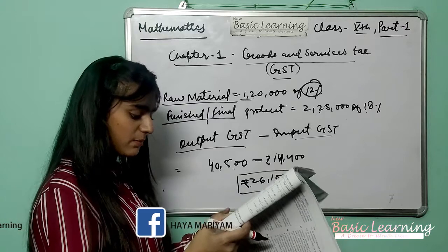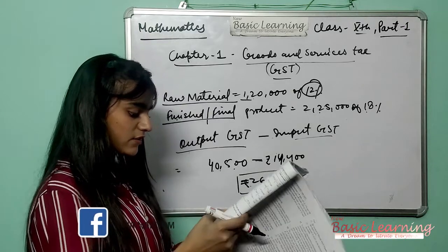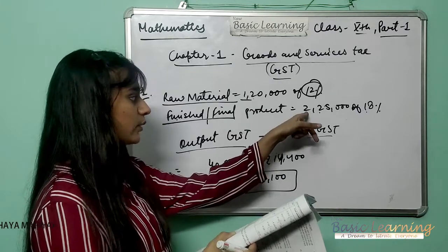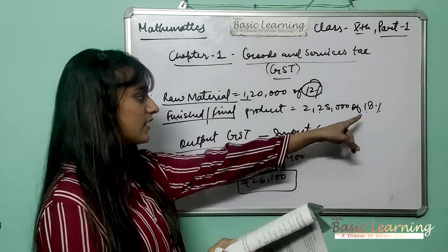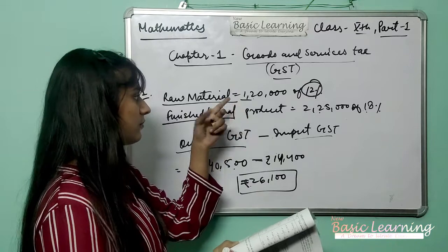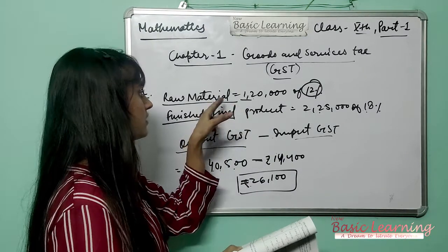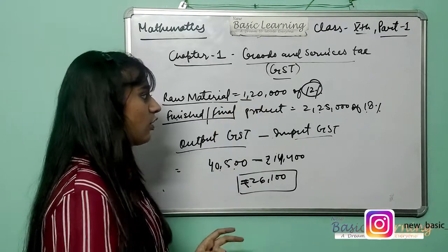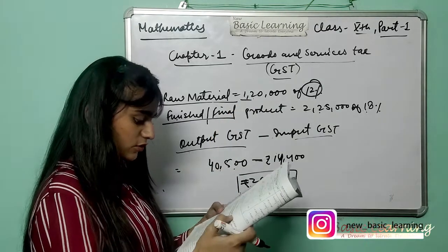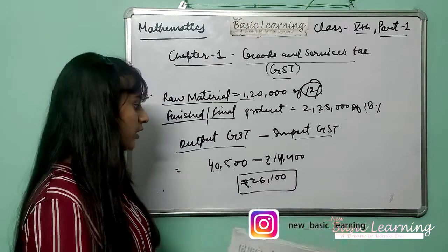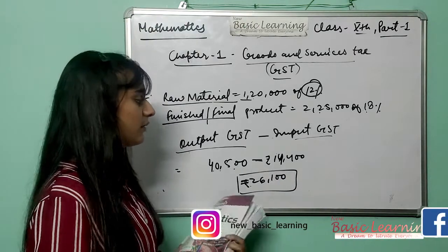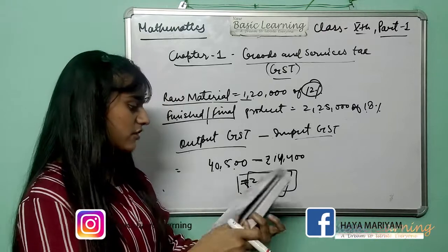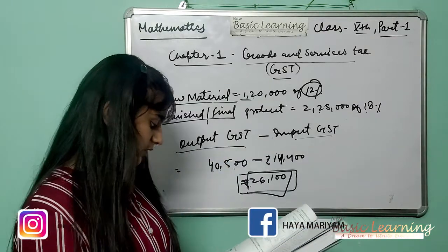So this was the GST payable by Mr. Abdullah, the manufacturer. When he sells his product worth Rs. 2,25,000 at 18% GST and buys raw material worth Rs. 1,20,000 at 12% GST, the GST payable by him is Rs. 26,100. The first question is done. Now let's see the second question.